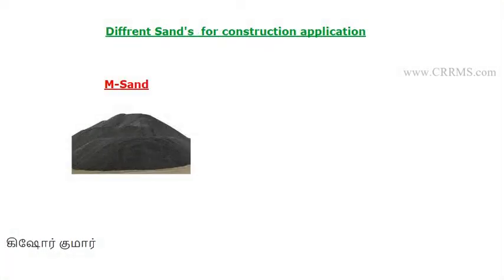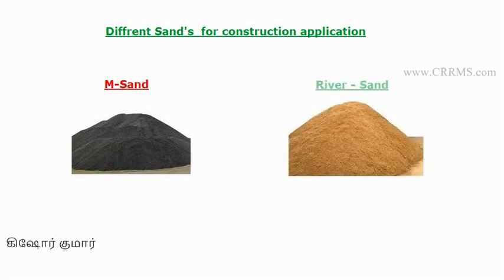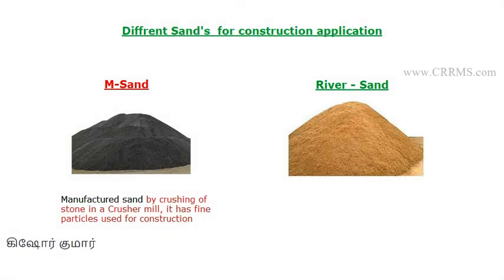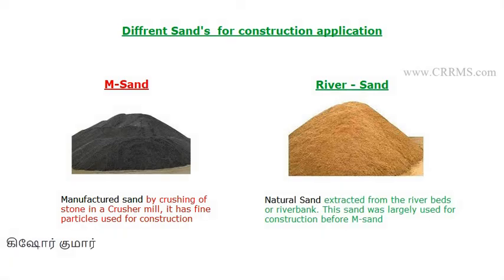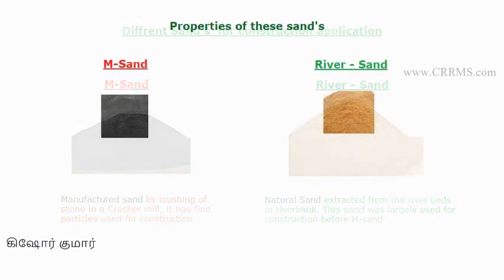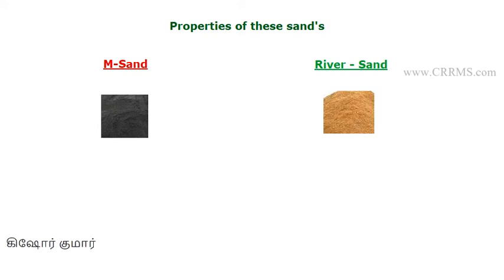We'll see different sands for construction applications. One is M sand and another is river sand. M sand is a manufactured sand — it is manufactured by crushing stone in a crusher mill and the fine particles are used for construction at various levels. River sand is a natural sand which is extracted from river beds or river banks, and was widely used before the introduction of M sand.